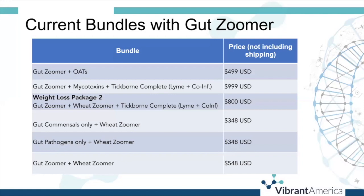We have a GutZoomer, mycotoxin, and tick-borne complete bundle — a great first-pass panel if you suspect a patient has some sort of infection or infectious exposure. There's also a weight loss package. GutZoomer and Wheat Zoomer is available as a bundle, and there's also one that adds the tick-borne test. For gastrointestinal patients specifically, the GutZoomer and Wheat Zoomer bundle is an excellent first bundle to start with.